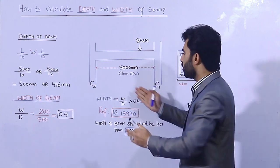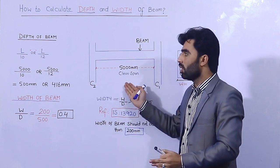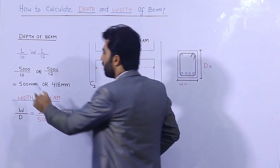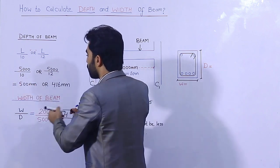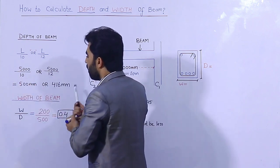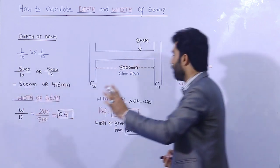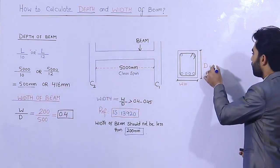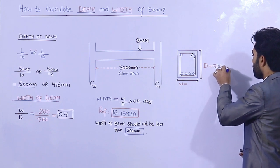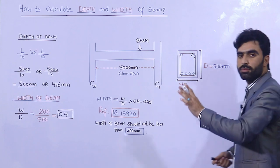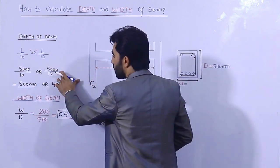The clear span could be 3000mm, 2500mm, 5000mm, or 6000mm. In our case, L is 5000mm, so using L divided by 10: 5000 divided by 10 gives a depth of 500mm. So the depth of the beam should be 500mm.